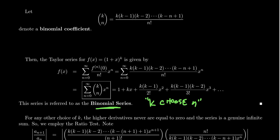When k is a positive integer, k choose n can be used to count things combinatorially. For example, if you have four donuts on the table and choose to eat two of them, four choose two equals 4×3 divided by 2×1, giving six ways to choose two donuts from four.